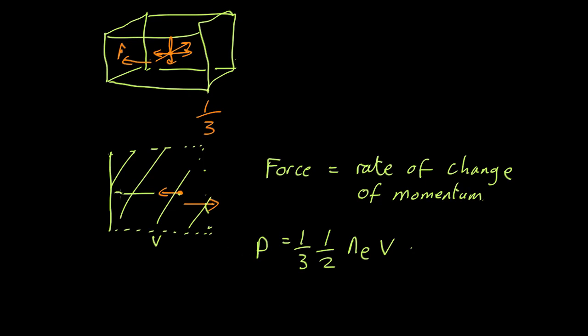But each electron that bounces off reverses: it used to have a momentum p this way, after it bounces off assuming it's an elastic collision it'll have a momentum the other way. So the change of momentum of each is going to be 2p. I should say this is a capital P that's the pressure, this is a small p which is the momentum. It's a bit confusing I know but we'll try and make it clear. So the pressure, the rate of change of momentum, comes out as one third the number of electrons, typical velocity, and typical momentum.